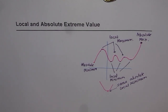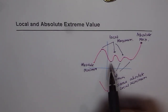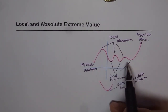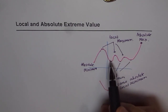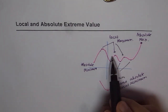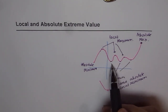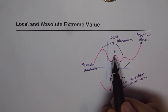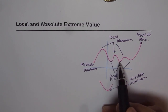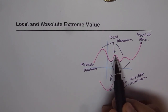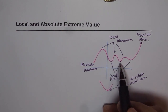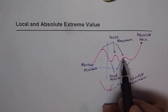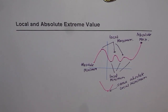Most of the time, local maximum and minimum occur at turning points. Whenever the graph turns — whenever it changes from increasing to decreasing — we have a maximum. And when it changes from decreasing to increasing, we have a minimum.